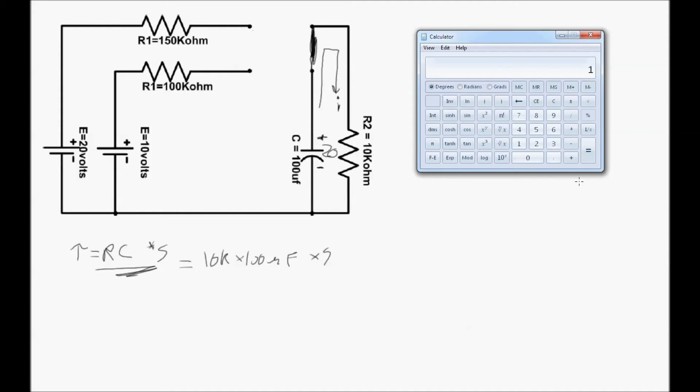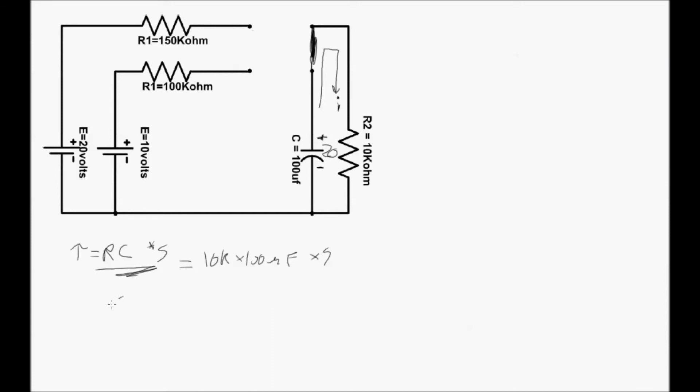So the time constant in this new circuit variation is now 1 second. So it'll take 5 seconds for the capacitor to discharge. So the steady state, the final steady state of this new circuit configuration will occur after 5 seconds.